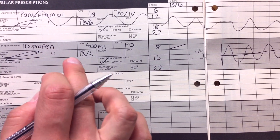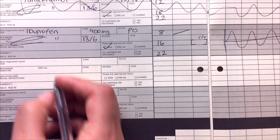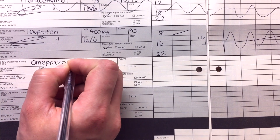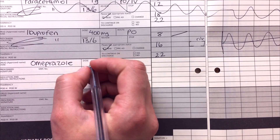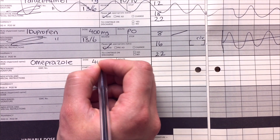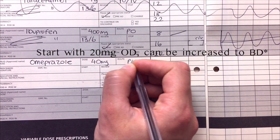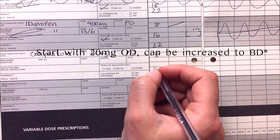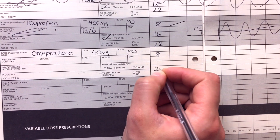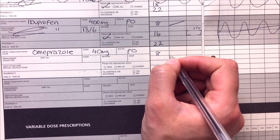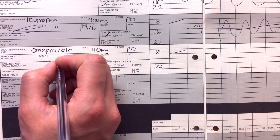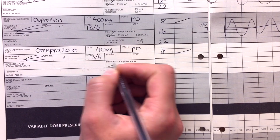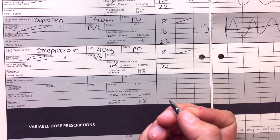With ibuprofen, make sure you always prescribe a PPI — so this is something like omeprazole and you can give 20 or 40 milligrams. Let's give 40 milligrams orally, and you can give that in the morning and in the evening. Again you can cross off the dose if you don't want it. Then put your GMC number, signature, and start date.